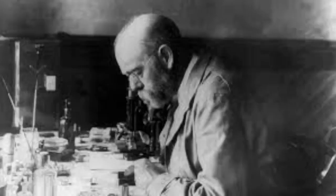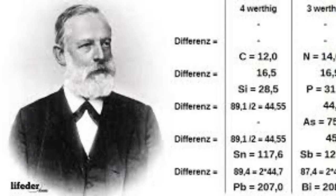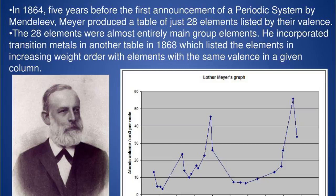In 1866, Meyer accepted a post at the Eberswalde Forestry Academy at Neustadt-Eberswalde, but two years later was appointed to a professorship at the Karlsruhe Polytechnic. In 1872, Meyer was the first to suggest that the six carbon atoms in the benzene ring, proposed a few years earlier by August Kekulé, were interconnected by single bonds only, with the fourth valence of each carbon atom directed toward the interior of the ring. During the Franco-Prussian War, the polytechnic was used as a hospital and Meyer took an active role in the care of the wounded.